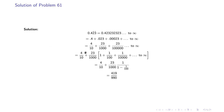We can rewrite 0.4̄2̄3̄ as 0.4 plus 0.023 plus 0.00023, and so on up to infinity. In fractional form: 4/10 plus 23/1000 plus 23/100000, and so on. We take 23/1000 as common, giving 4/10 plus (23/1000) multiplied by (1 + 1/100 + 1/10000 + ...). The first term is 1 and common ratio is 1/100, so the sum of infinite terms gives a final value of 419/990.